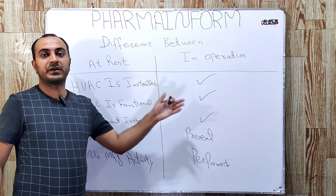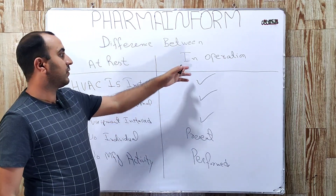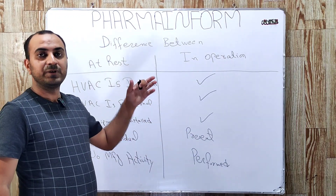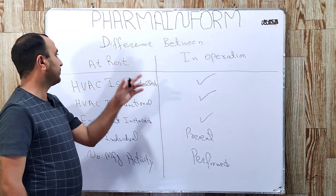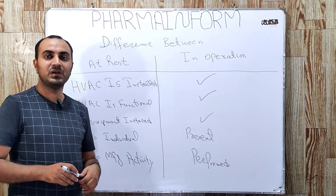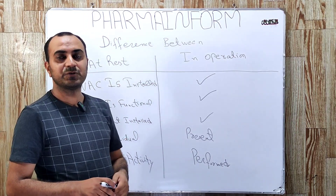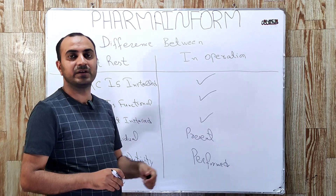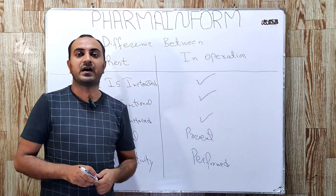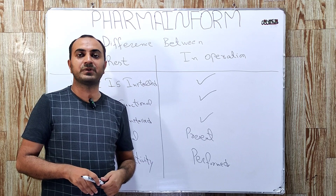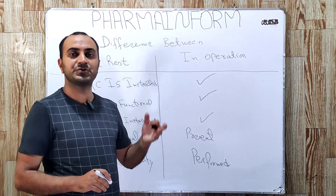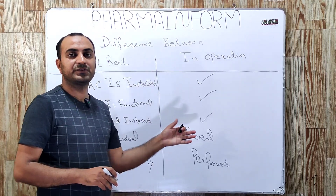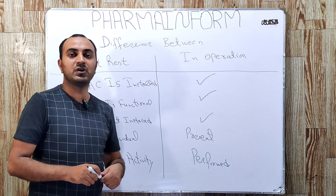The particle count in operation will be different from the at rest condition. You can learn which size of particle is measured in the clean room and how many particles are permitted in which type of clean room — all of this is explained in the video, the link of which is provided in the description.